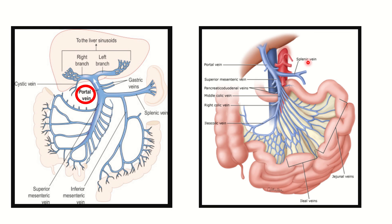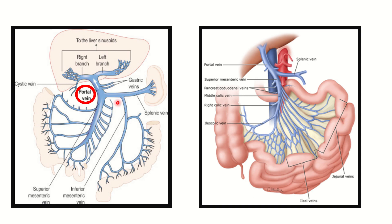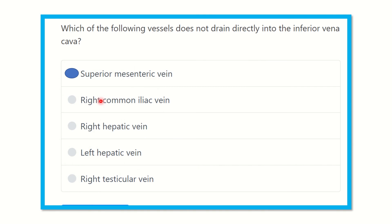We can also see the splenic vein, superior mesenteric vein, gastric vein, and cystic vein, as well as other veins such as the middle colic vein, right colic vein, and ileocolic vein — all tributaries of the portal vein. So our final answer is: the superior mesenteric vein. It forms the portal vein and does not drain into the inferior vena cava. The superior mesenteric vein drains into the portal vein.